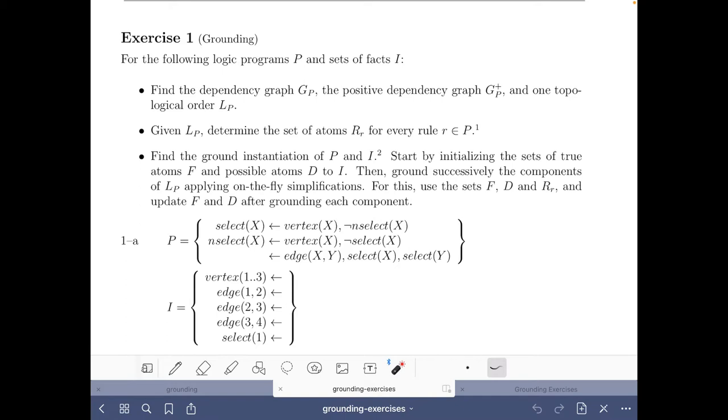And given this topological order we have to determine for every rule of the program this set of atoms R. And after doing that we come to the main part of the exercise where we have to find the ground instantiation of the program and the set of facts. And for this we start initializing the set of true atoms F and possible atoms D to I.